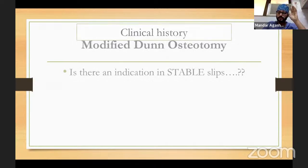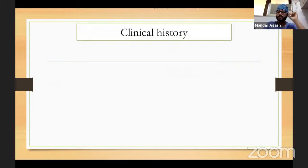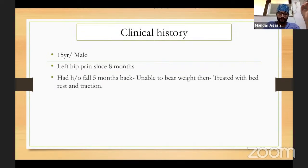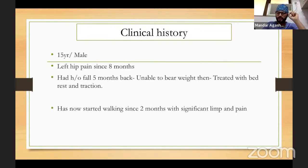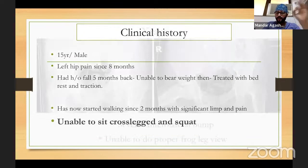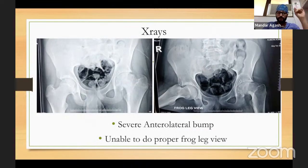The modified Dunn procedure: a case of a 15-year-old male with left hip pain for eight months with a history of fall five months back, now walking since two months with significant pain and limp — unable to sit cross-legged or squat. The inability to sit cross-legged and squat is a very important clinical finding. This technique is described by Karl Ziebarth et al. The patient is placed in lateral decubitus position. The incision is centered on the tip of the greater trochanter, about eight centimeters distal and eight centimeters proximal.